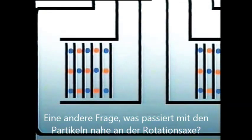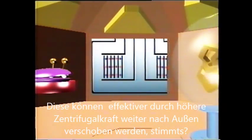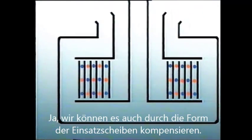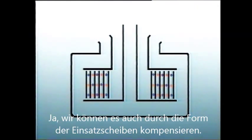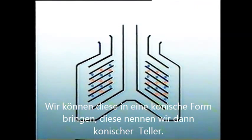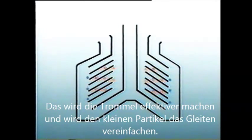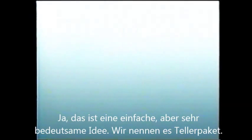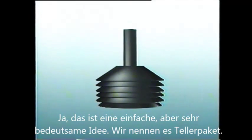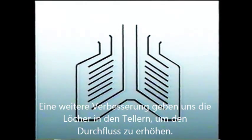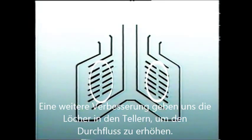What will happen to the particles nearer the center of rotation? They'd be subjected to a smaller, less effective centrifugal force. So could we compensate for this in the shape of the cylinders? We could turn them into conical disks and alter the shape of the bowl accordingly. This will make them more effective and also allow the particles to slide in the direction they have to travel. This is what is called a disk stack.